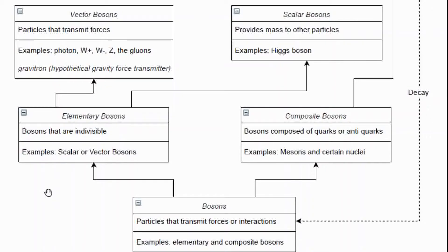The photon is our electromagnetic force transmitter, the gluons are the strong nuclear force transmitter, and the W and Z bosons are the weak nuclear force transmitters.